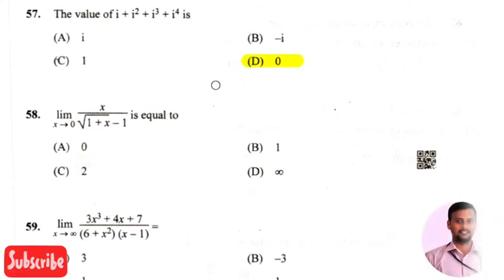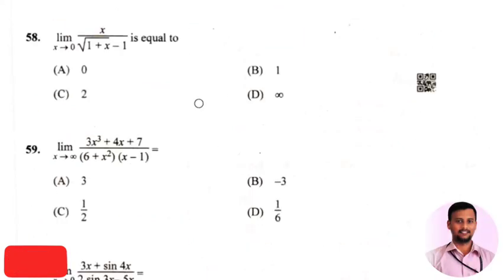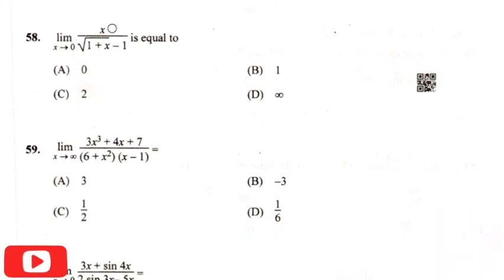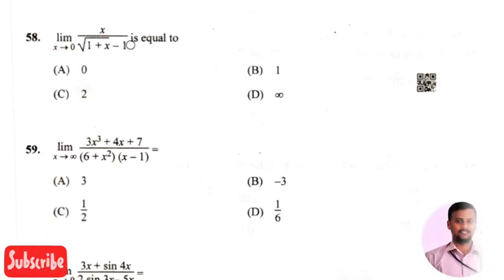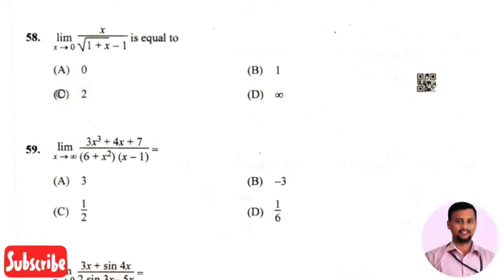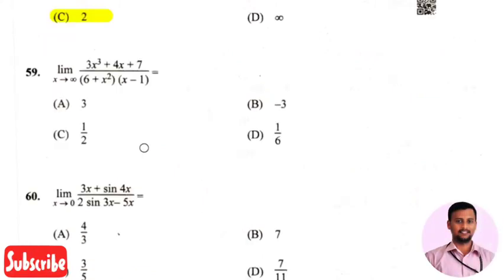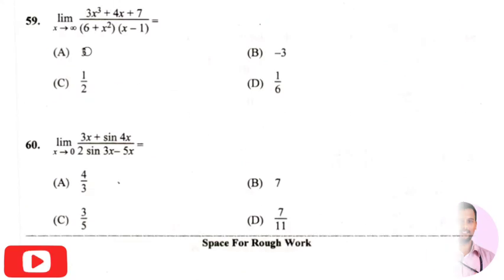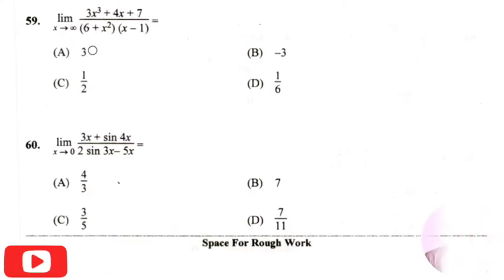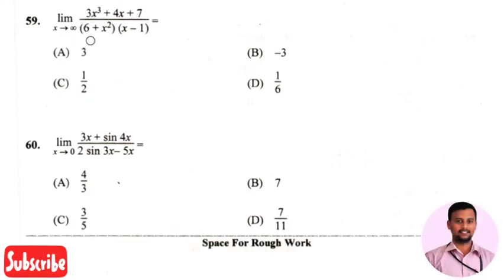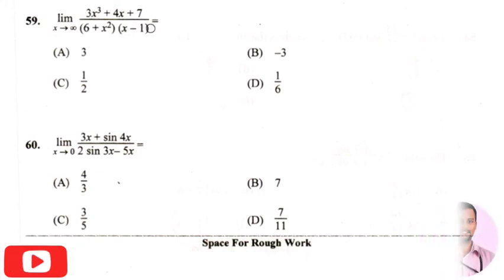The next question is: limit of x divided by (root of one plus x minus one) — the right answer is option three, that is two. The next question is: limit of (three x cubed plus four x plus seven) divided by (six plus x squared) into (x minus one) — the right answer is option one, that is three.